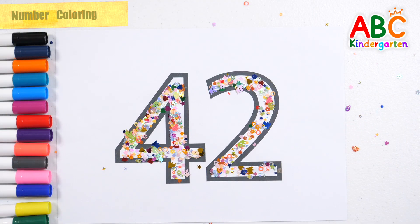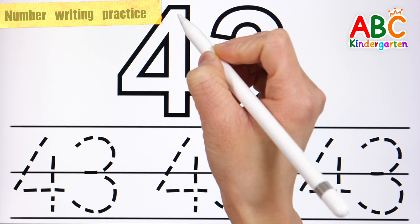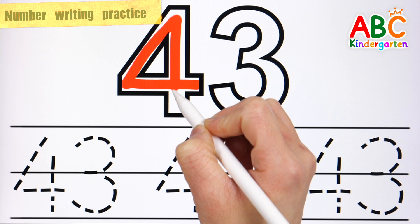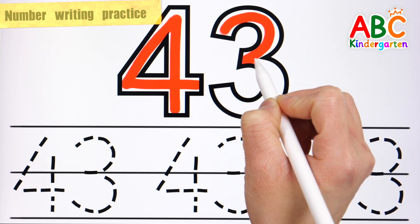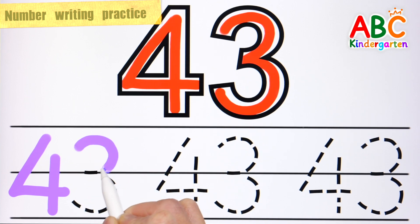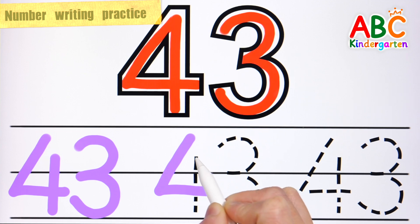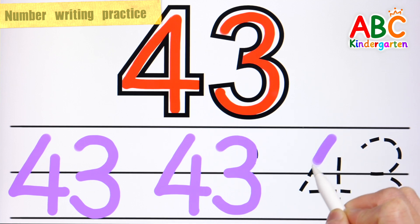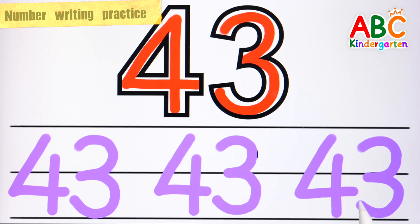Shiny number 42. Let's write it down in thick numbers at the top. 43. Let's write the number 3 times along the dotted line at the bottom. Number 43. Very good!